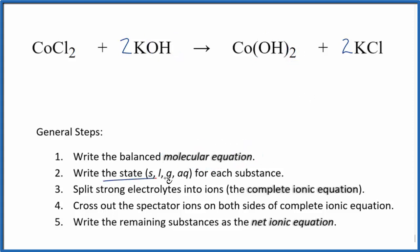Now we can write the state for each substance — you know your solubility rules. Chlorides are very soluble, so aqueous — it'll dissolve and split apart into its ions. Potassium hydroxide is a strong base and a strong electrolyte, so it's going to be aqueous as well. But in general, hydroxides are insoluble.